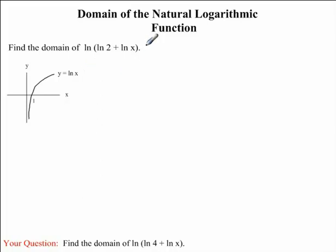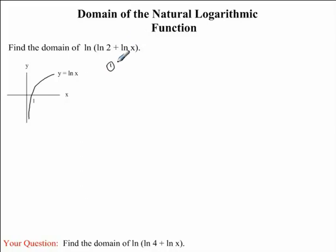So now looking at our question, we're finding the ln of the expression inside. We know that ln2 plus lnx has to be a positive number, or greater than 0. So this is the first restriction we are going to have: ln2 plus lnx must be greater than 0.